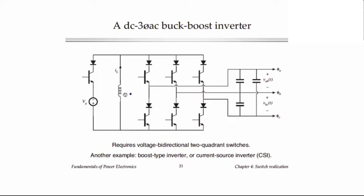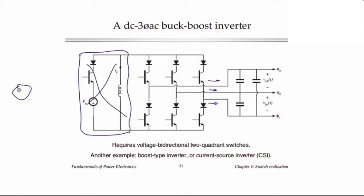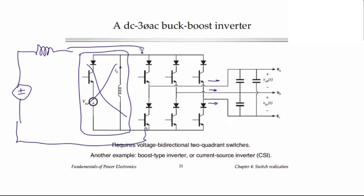Basically we can build a DC to three-phase AC inverter that synthesizes output-side current waveforms that are sinusoidal. A well-known converter similar to this is called the current source inverter, which can be viewed as derived from the boost converter. Inside that circuit we replace part of it with a DC source and an inductor. That inductor carries a current with small ripple, which is switched to the different three-phase outputs to synthesize sinusoidal output current waveforms. It's called the current source inverter and it requires voltage bidirectional switches as well.